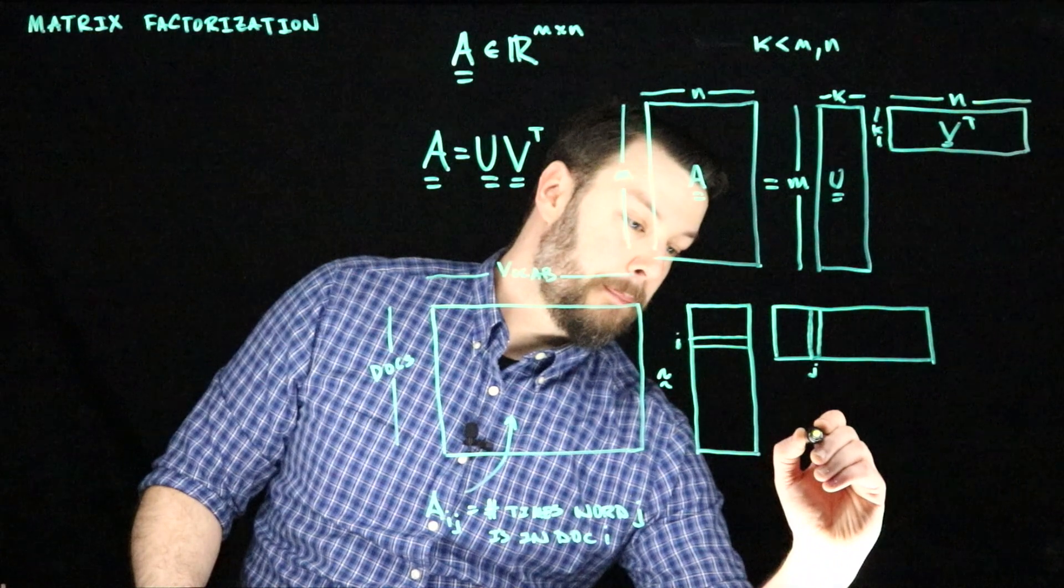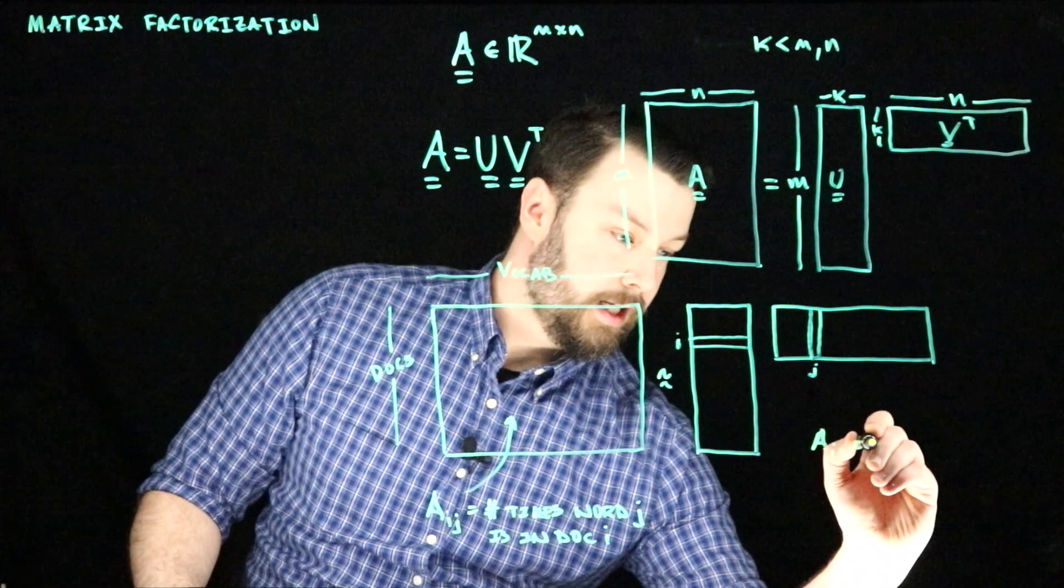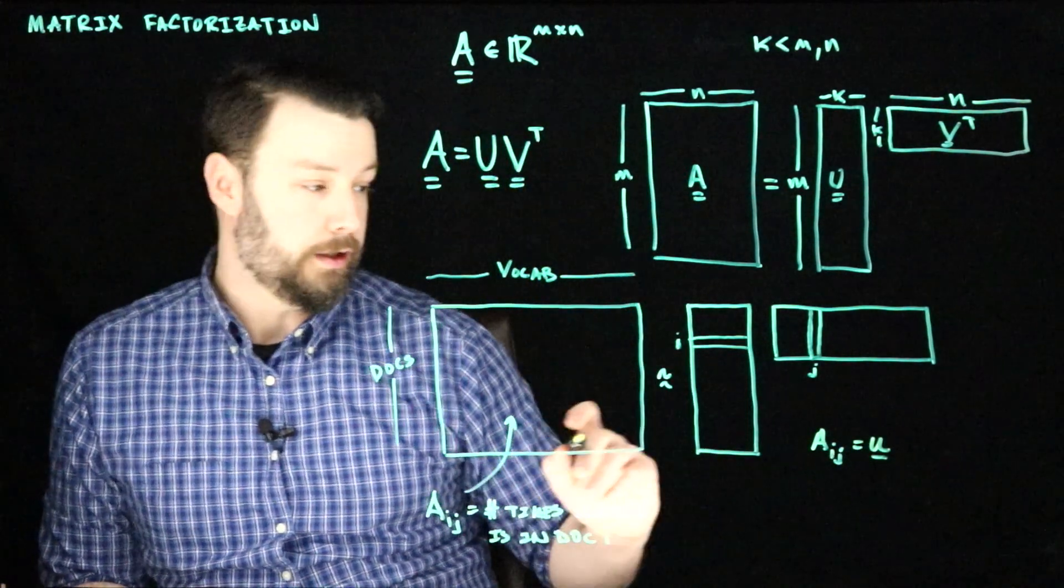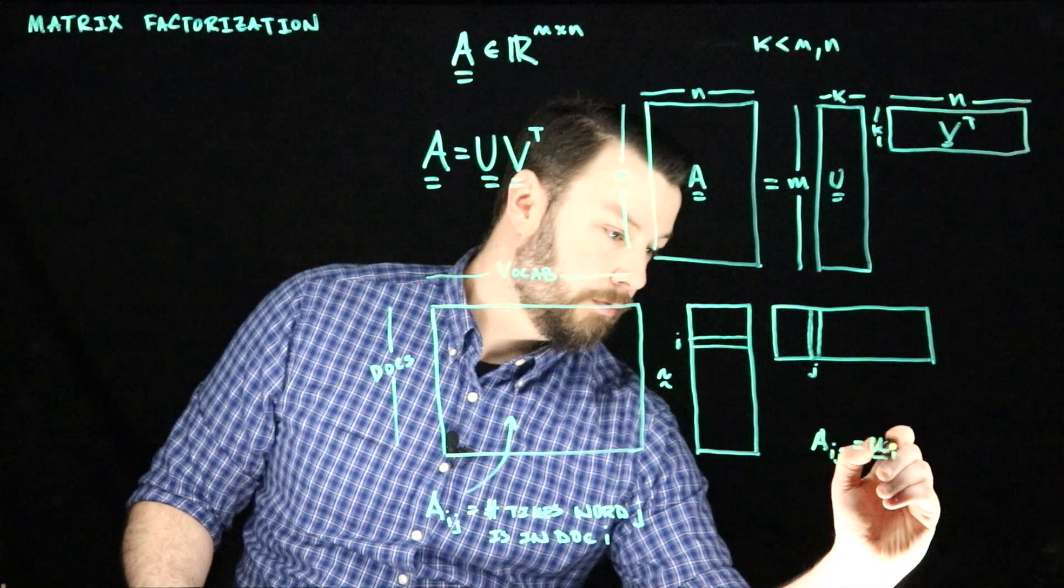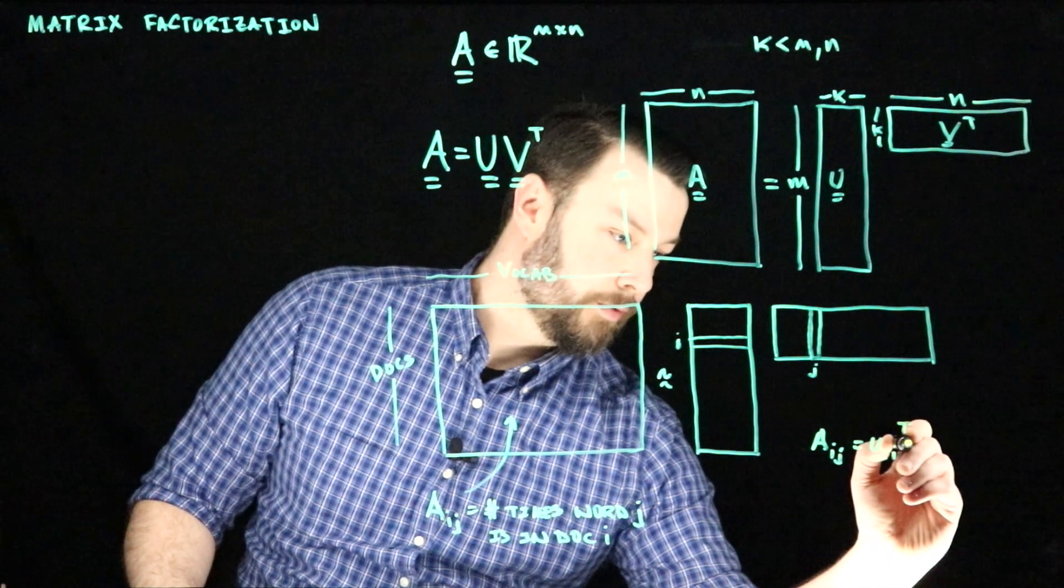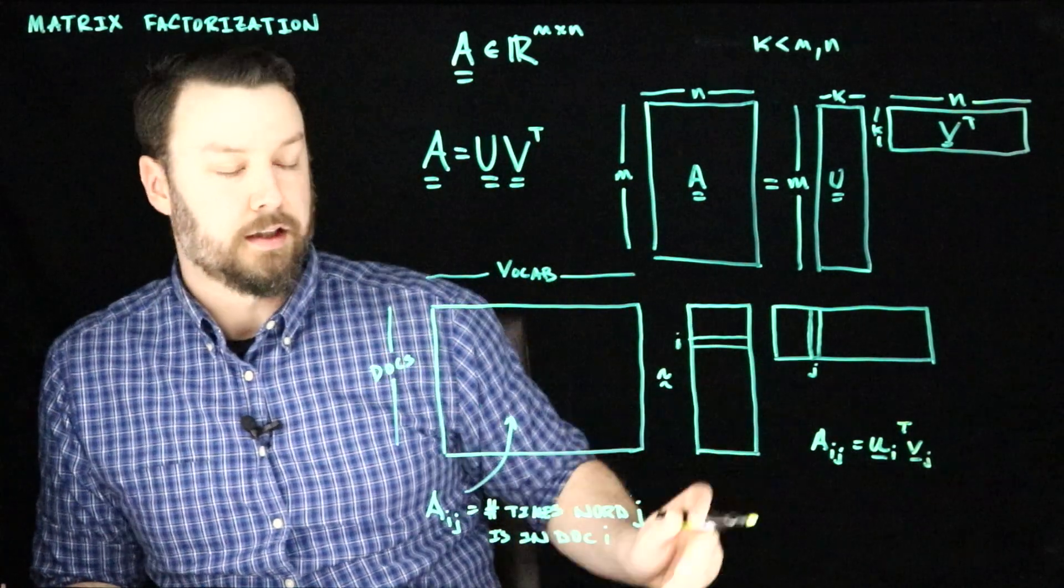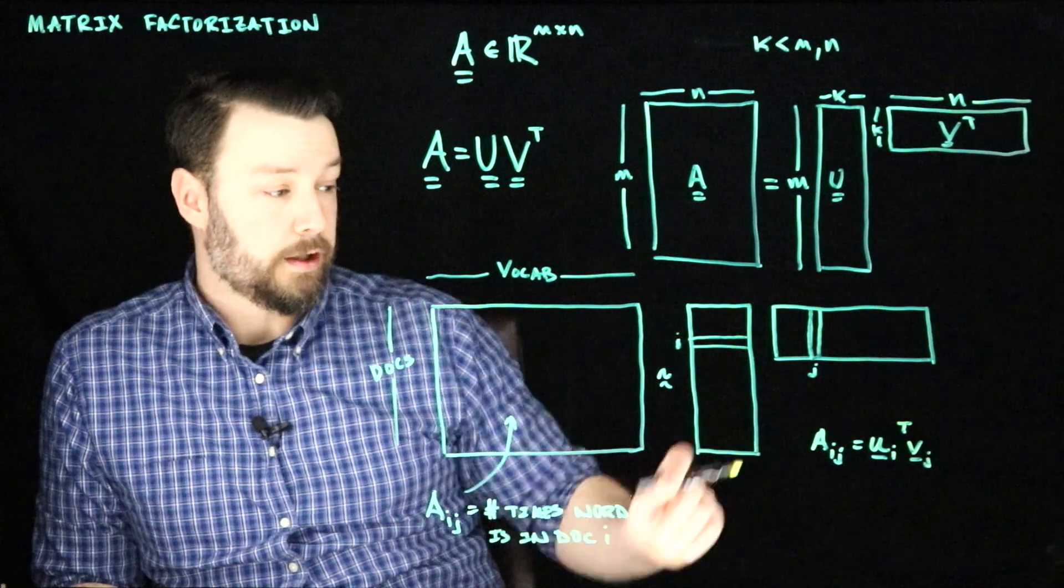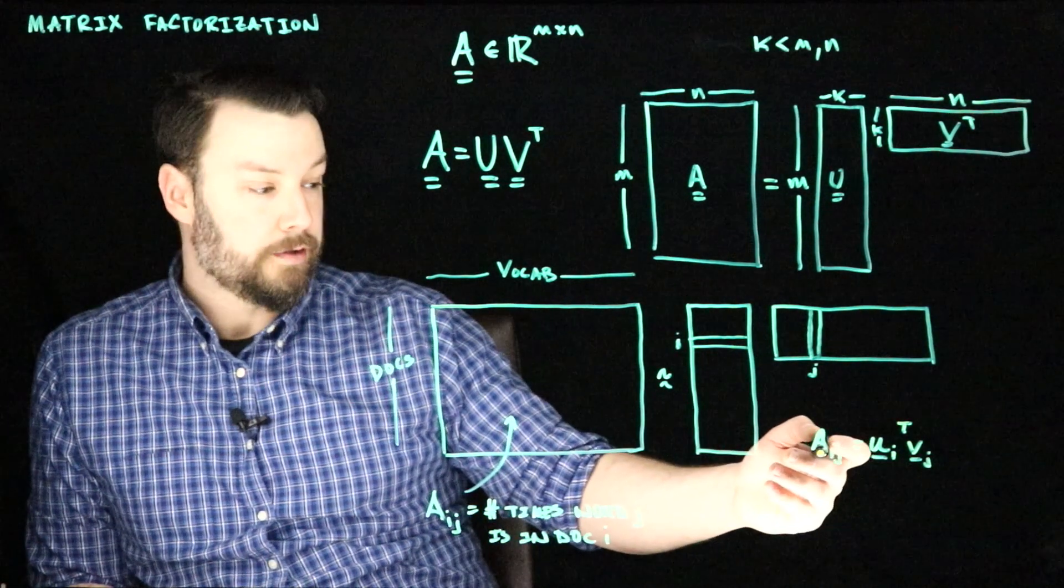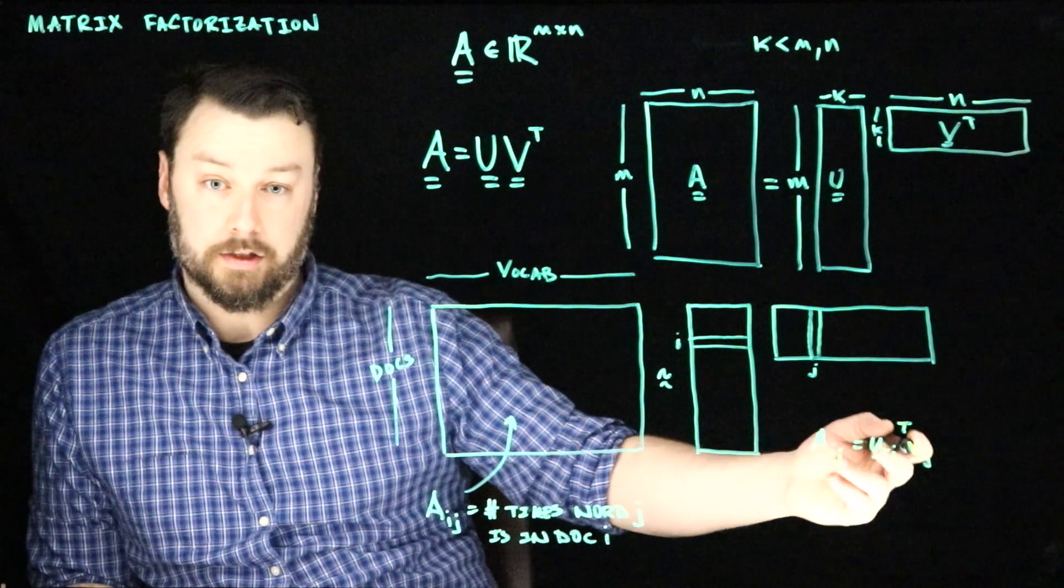So we could think of aij as being a row vector from U here, the ith one, and we're going to actually be multiplying that by some vj, which is the column vector from this matrix V. So document i will have a bigger number of counts for word j whenever this inner product is large.